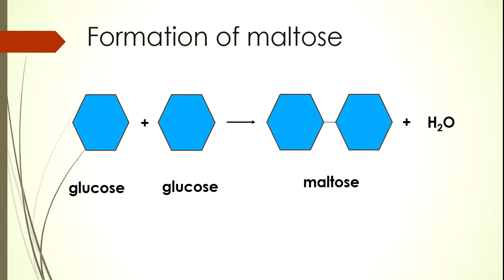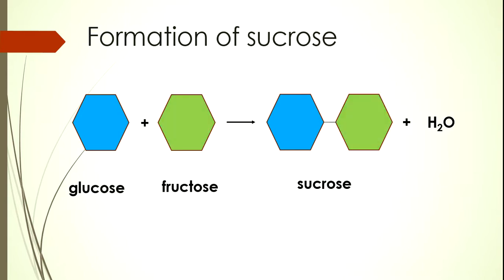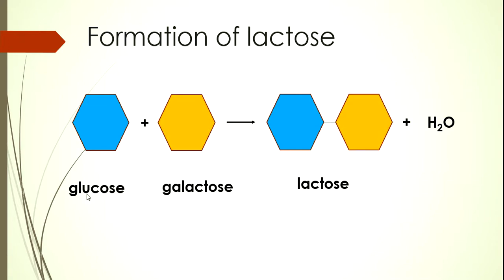Now let us look at how condensation is involved in the formation of the different types of disaccharides. In the case of maltose, it would consist of two glucose molecules chemically joined together by condensation reaction to form a maltose molecule, and a molecule of water is removed as a by-product. In the case of sucrose, it would involve the condensation of a glucose molecule and a fructose molecule to form sucrose, and the by-product is water. The third example is lactose, which consists of a glucose molecule chemically combined with galactose via a condensation reaction to form lactose and water.